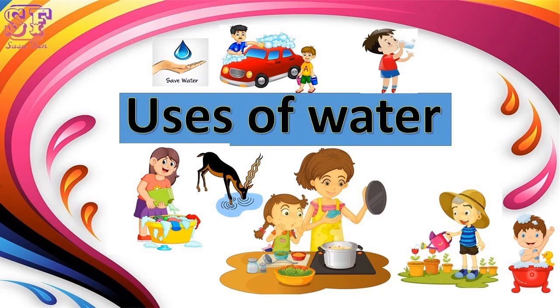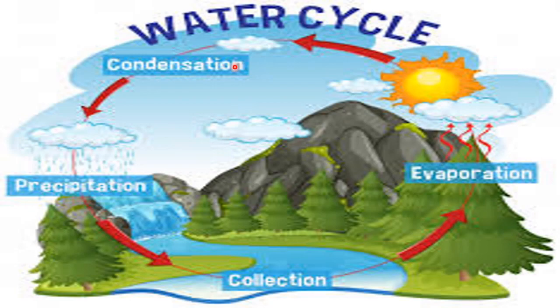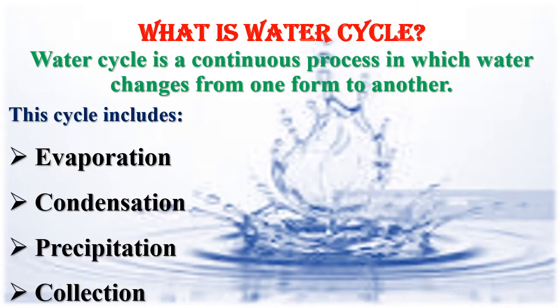Let's learn about the water cycle. The water cycle is a continuous process in which water changes from one form to another. This cycle includes the processes of evaporation, condensation, precipitation, and collection.